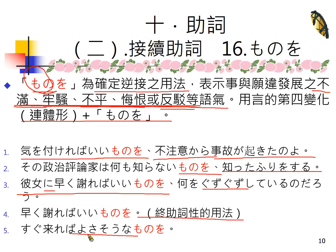ものを后面其实是可以省略的，因为前面这样讲，整个不满、牢骚不平、悔恨或反驳的语气其实就已经非常强烈地表现出来了，所以到ものを这里就可以停了，后面接终助词心的用法。第四句：すぐくればよさそうなもの——「早点来就好了啦」，语气稍微更委婉，你如果马上来的话不是就比较好了吗？这叫确定逆接。今天介绍的ものの跟ものを不是那么常用但是还是看得到，希望同学能够多加理解，自己要多做一些练习。